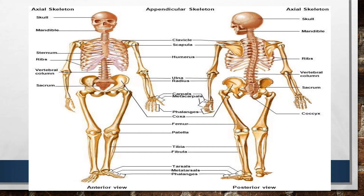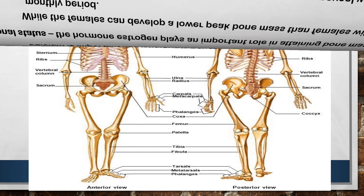We have an example of the anterior view, which is the frontal view, and the back view, which is called the posterior view. Calcium is an important nutrient for the bones. This is the whole body parts of our skeleton.